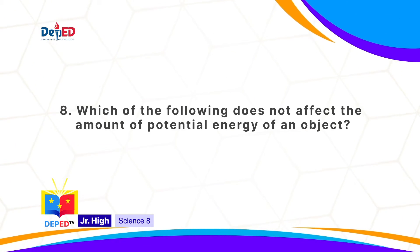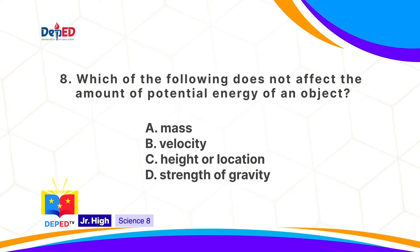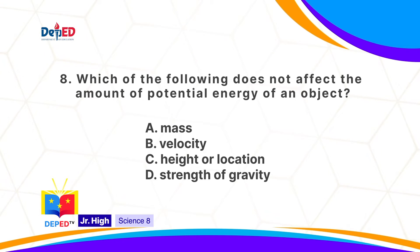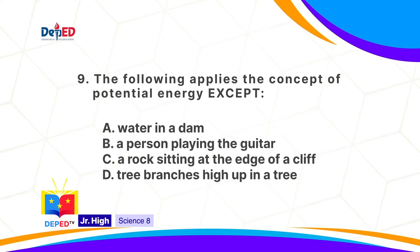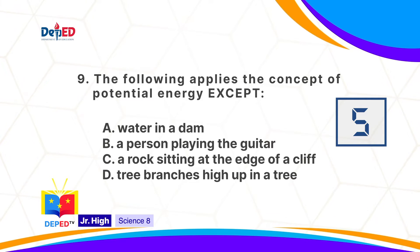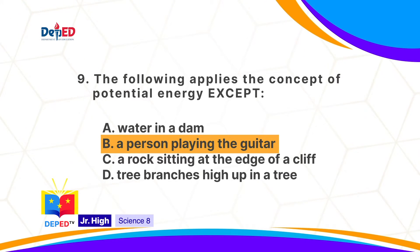Which of the following does not affect the amount of potential energy of an object? A, mass. B, velocity. C, height or location. D, strength of gravity. The correct answer is B: velocity. The following applies the concept of potential energy except: A, water in a dam. B, a person playing the guitar. C, a rock sitting at the edge of a cliff. D, tree branches high up in a tree. The correct answer is B: a person playing the guitar.